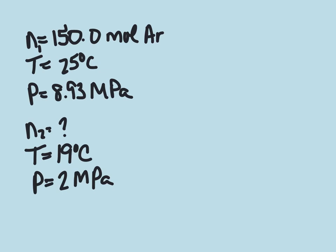After some of the argon has been used, the pressure drops to 2 megapascals and the temperature becomes 19 degrees Celsius. We're trying to figure out what mass of argon remains in the cylinder, but we don't know how many moles were removed. First thing,